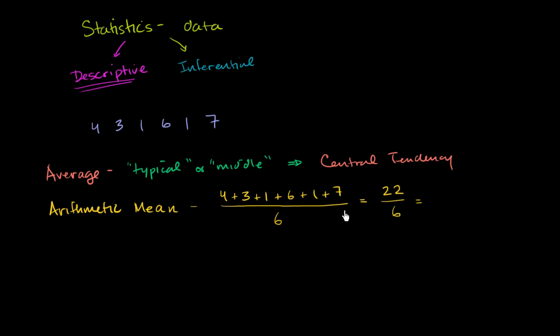All of that over 6, and we could write this as a mixed number. 6 goes into 22 three times with a remainder of 4. So it's 3 and 4/6, which is the same thing as 3 and 2/3. We could write this as a decimal with 3.6 repeating. We could write it any one of those ways, but this is kind of a representative number. This is trying to get at a central tendency.